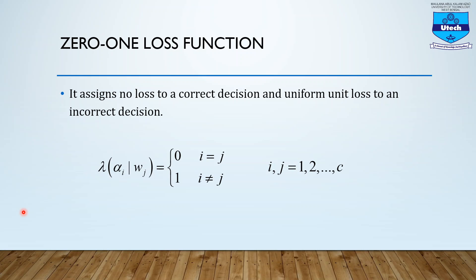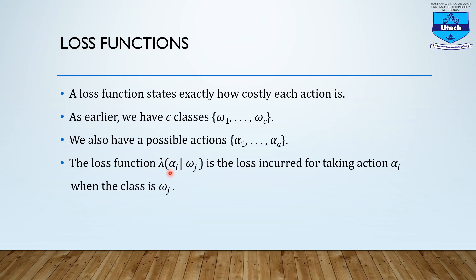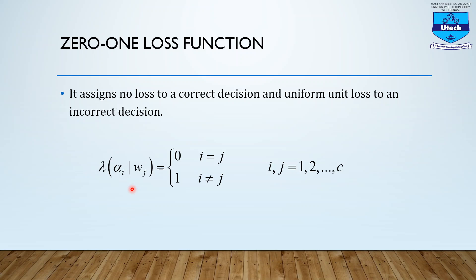What is the 0-1 loss function? This becomes: it will be 0 when i equals j, and 1 when i is not equal to j — that is, a 0-1 loss function, where i and j can be any value between 1 to C. The 0-1 loss function assigns no loss to a correct decision and a uniform unit loss to an incorrect decision. There will be no loss if a correct decision is taken, that is when i equals j, and there will be a uniform unit loss of value 1 for an incorrect decision when i is not equal to j.